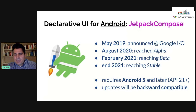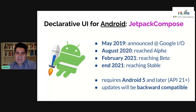Basically any update is going to be backward compatible because Jetpack Compose is simply like a library you define in Gradle — a bit like AppCompat. If you want to use the latest version, you just upgrade the version number and you're able to use it straight away.